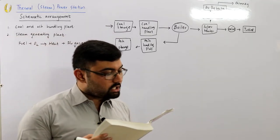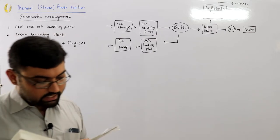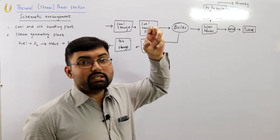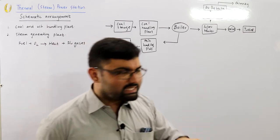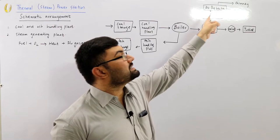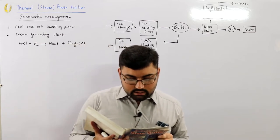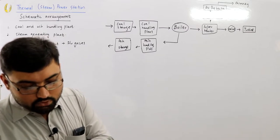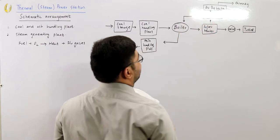An economizer is essentially a feed water heater — it derives heat from the flue gases coming from the superheater. The feed water coming from the condensate is fed into the economizer, where the heat from the flue gases is used to heat the feed water. This heated feed water then goes back to the boiler.